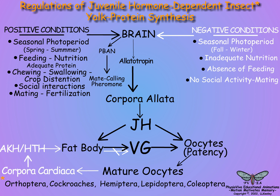In species with repeated reproductive cycles, brain allostatic neurohormones may stop juvenile hormone synthesis and vitellogenesis while the female feeds and prepares to undertake repeated vitellogenic cycles.